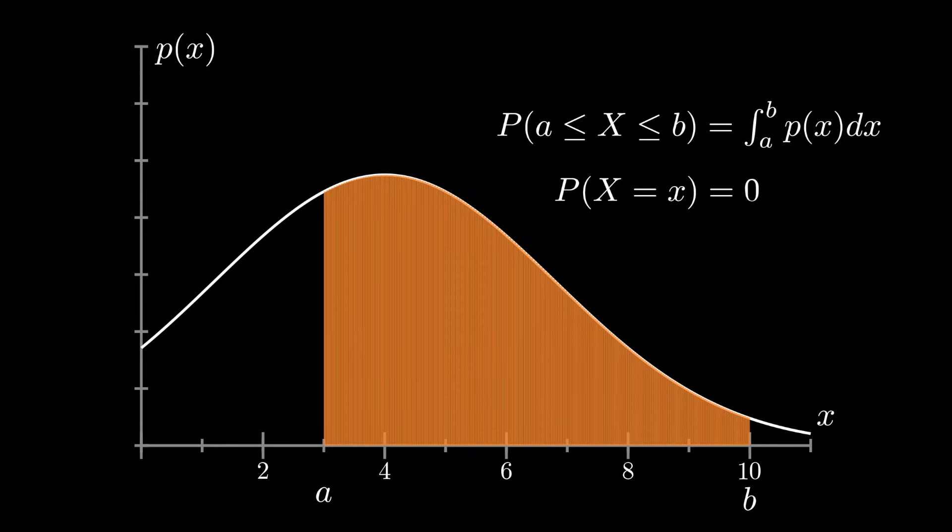Now like the probability mass function, the probability density function also comes with some constraints. The pdf must always be non-negative, and in addition the integral of the pdf over all the reals must equal 1. And unlike for the discrete case, here any particular value of the pdf is actually allowed to be greater than 1.